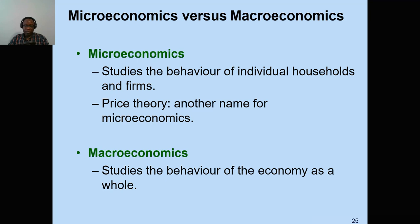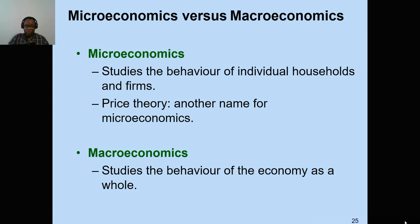We have two main branches of economics. Microeconomics studies the behavior of individual households and firms and looks at individual units, including price theory. Macroeconomics studies the behavior of the economy as a whole, looking at aggregates. In this course, we will spend a fair amount of time looking at macroeconomic indicators like GDP, inflation, unemployment, and so on. Thank you and have fun with this — I'll see you in the next one.